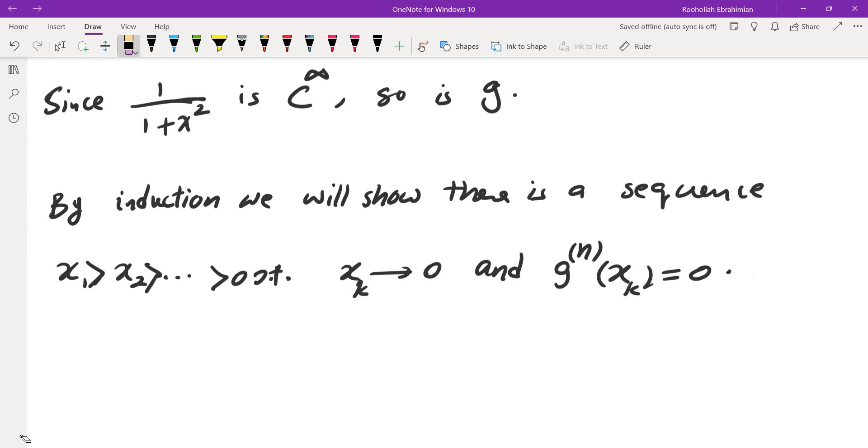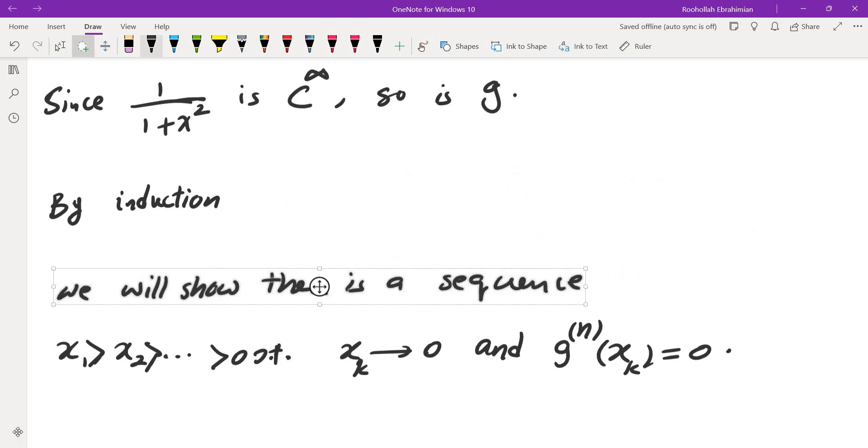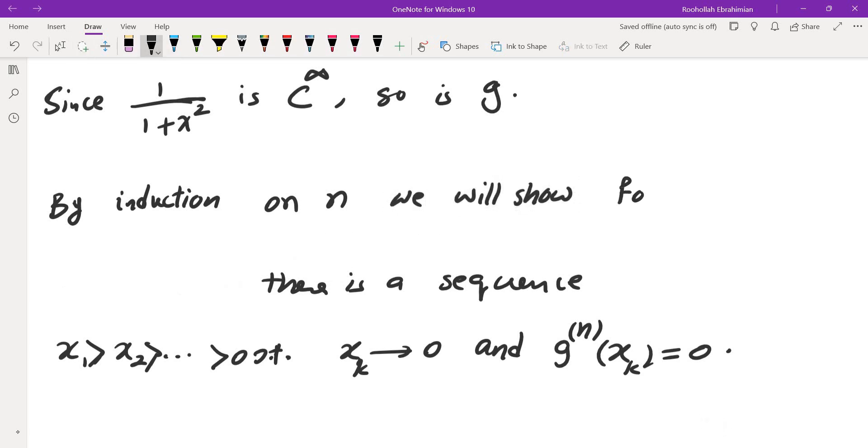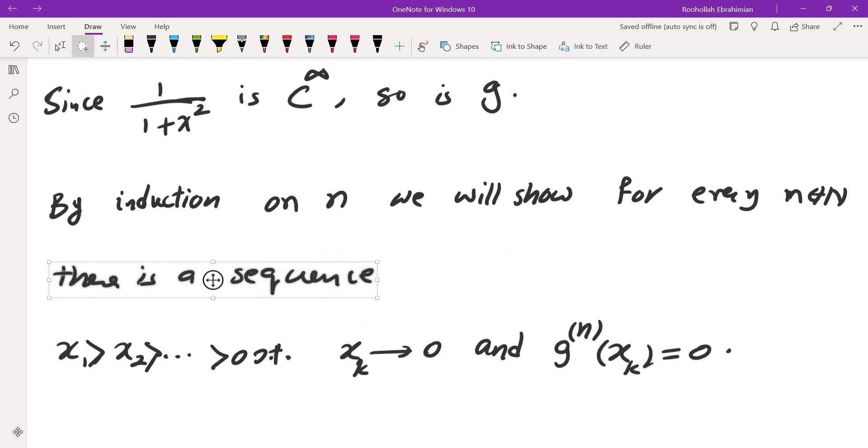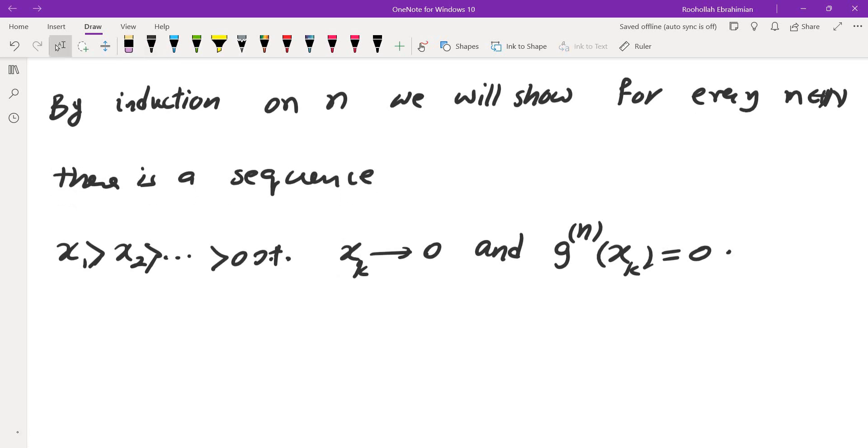So maybe I'll have to put the n at the beginning. So by induction on n, we will show for every integer n, for every positive integer n, there is a sequence that converges to 0 and nth derivative of g at those points is 0. How do we do that? We are going to do that by induction.